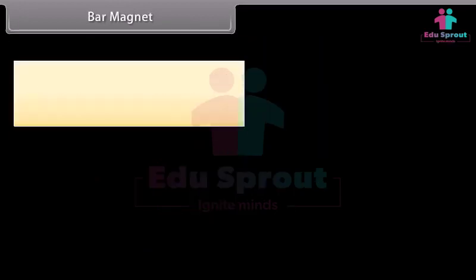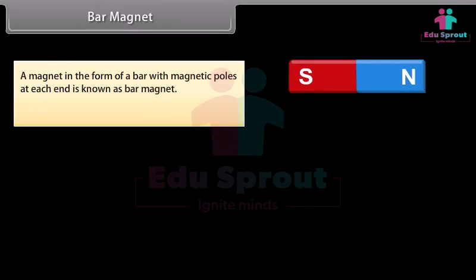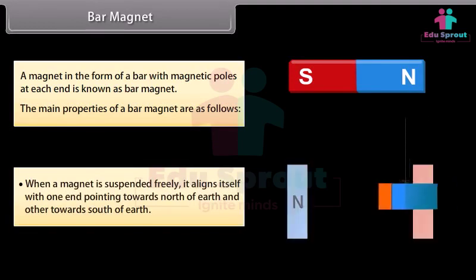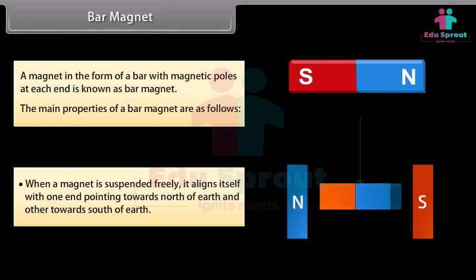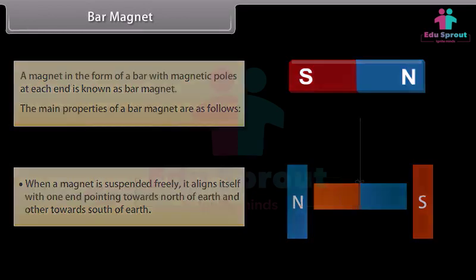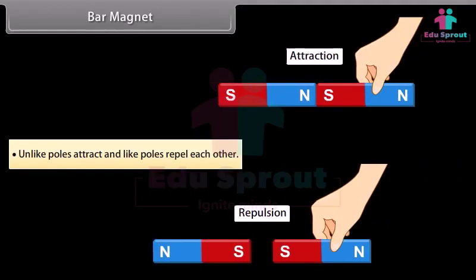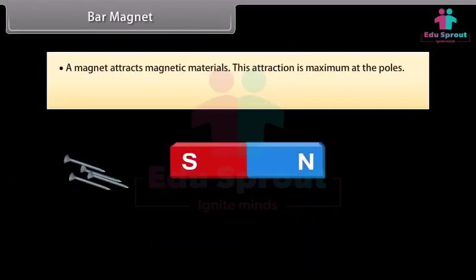Bar magnet: A magnet in the form of a bar with magnetic poles at each end is known as a bar magnet. The main properties of a bar magnet are as follows: when a magnet is suspended freely, it aligns itself with one end pointing towards the north of Earth and the other towards the south of Earth. Unlike poles attract and like poles repel each other. A magnet attracts magnetic materials, and this attraction is maximum at the poles.